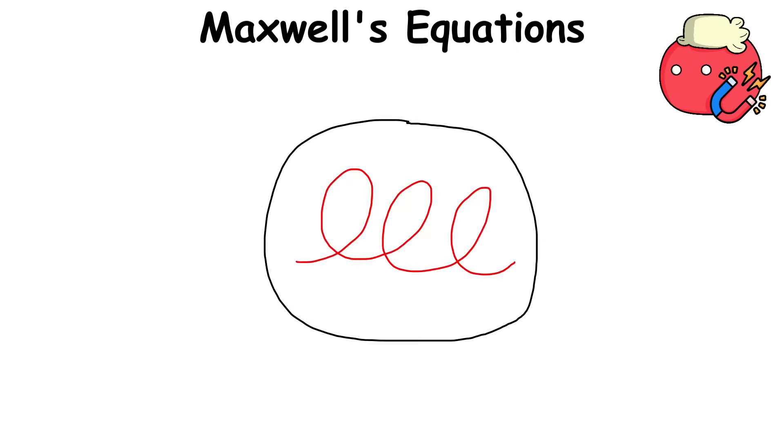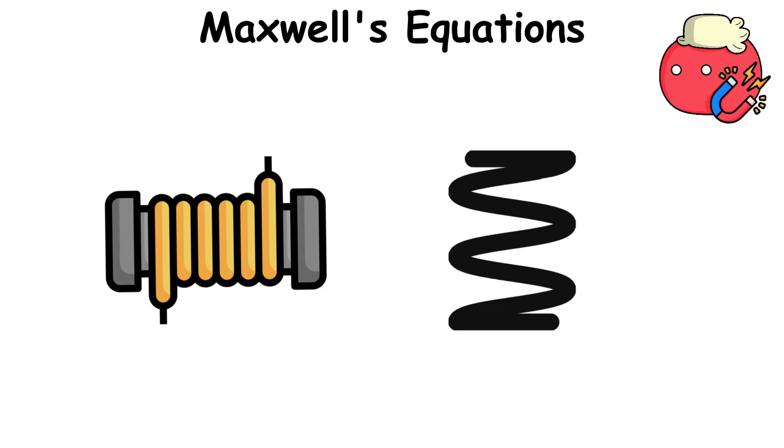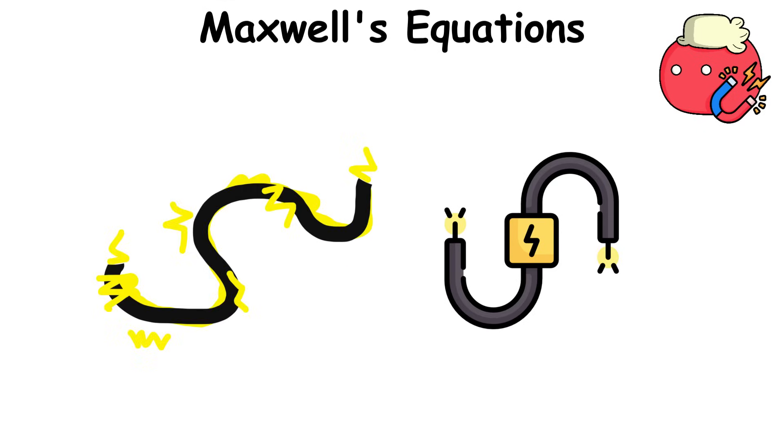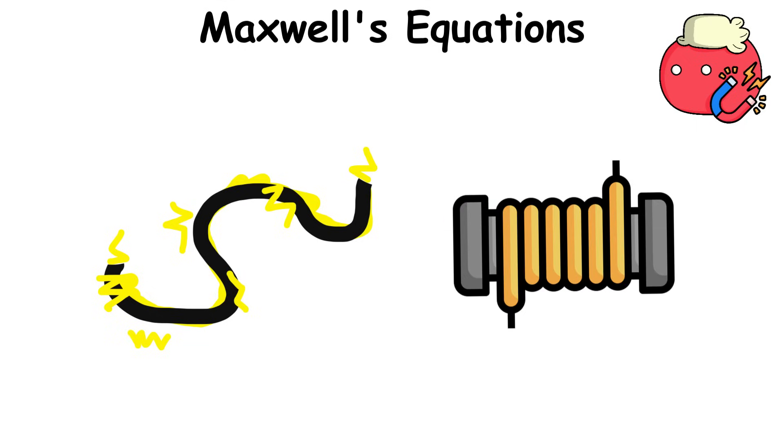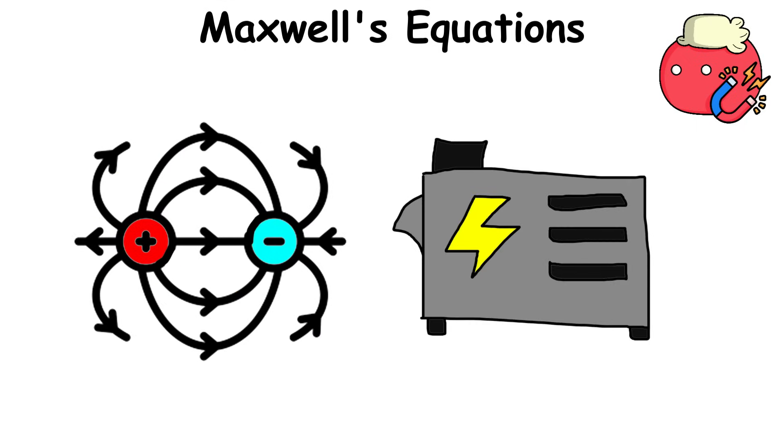The third is Faraday's law of induction, which says that moving a magnet near a wire can make electricity flow in the wire. We make electricity in a wire simply by moving a magnet or changing a magnetic field. This is precisely how generators work.